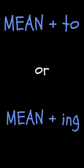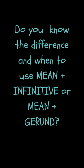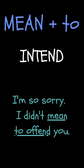Some verbs can be followed by a second verb, either in the infinitive or in the gerund — the ing form of the verb — but with a difference in meaning. Today we are going to look at the difference when we use 'mean' with the infinitive and when we use 'mean' with the ing form of the verb. 'Mean' when used with the infinitive means 'intend'. For example: I'm so sorry, I didn't mean to offend you.